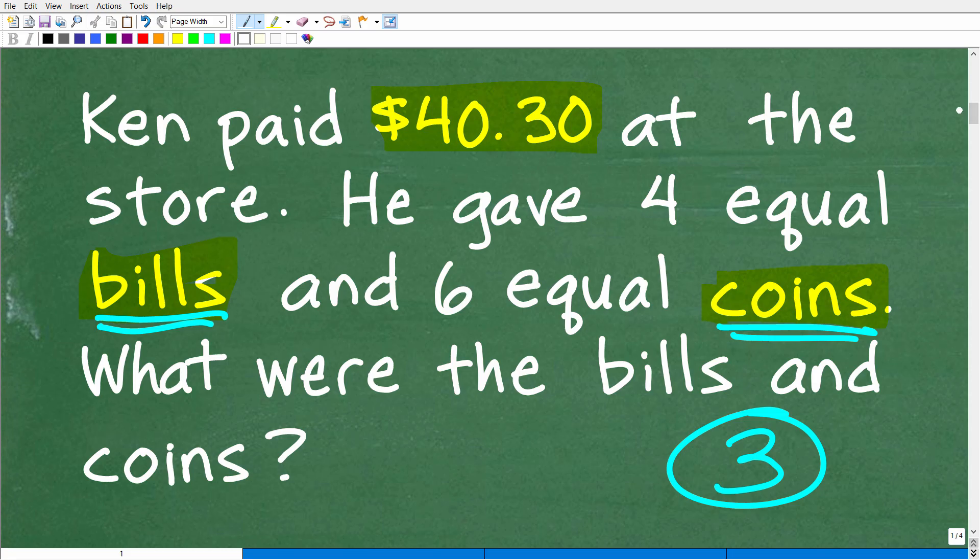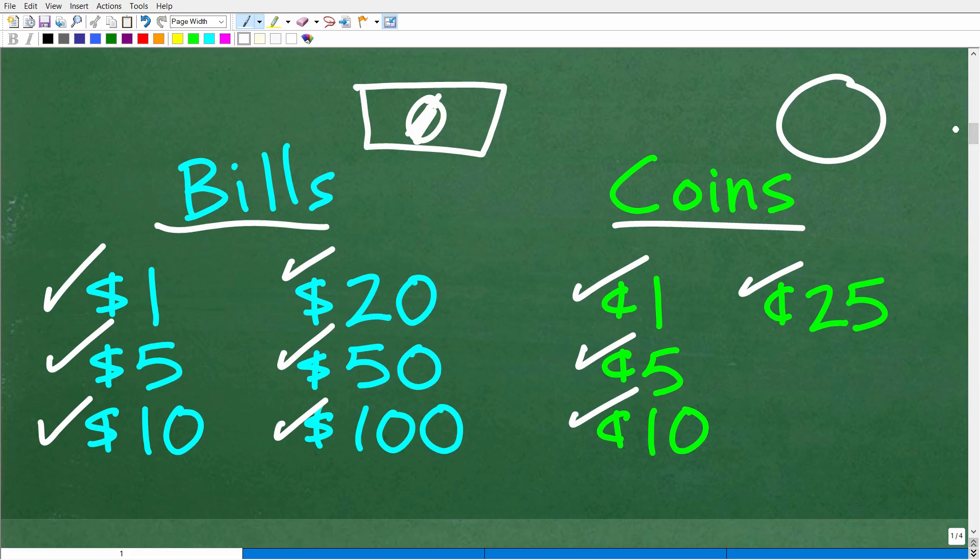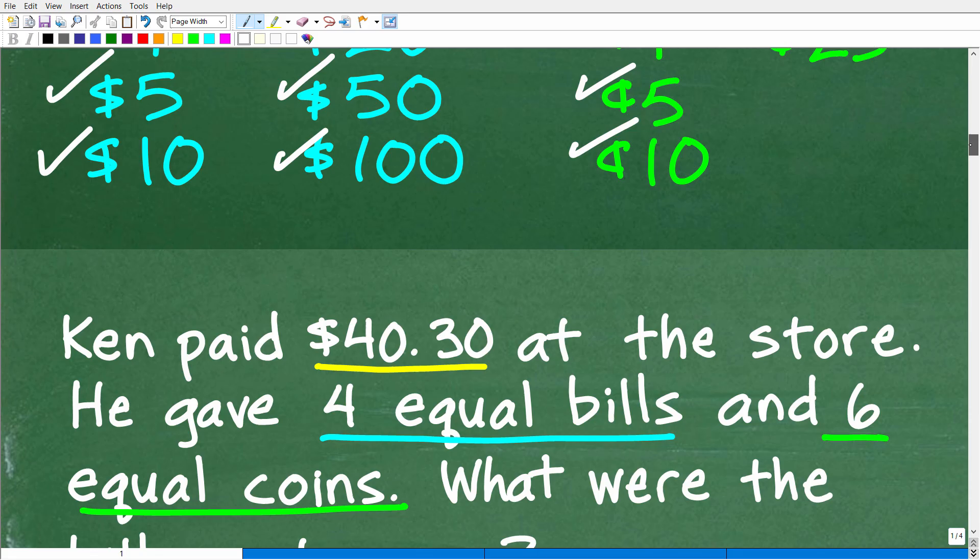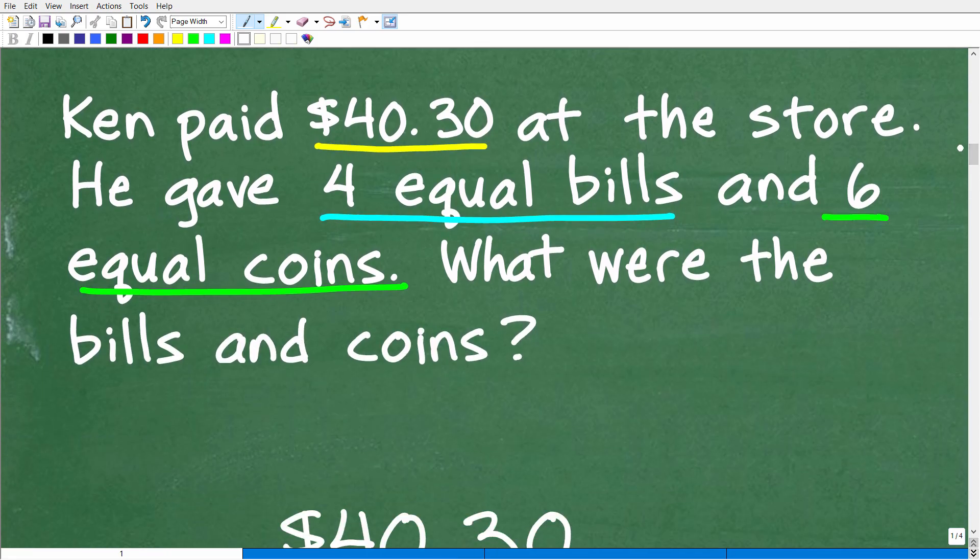So the question is, he gave the cashier four equal bills. So in other words, he didn't give like a $20 and then $5 and then some $1 bills, but four equal bills and six equal coins. So hopefully most of you're saying, come on, this is really easy, but let's go ahead and proceed just in case some of you out there are a little bit confused.